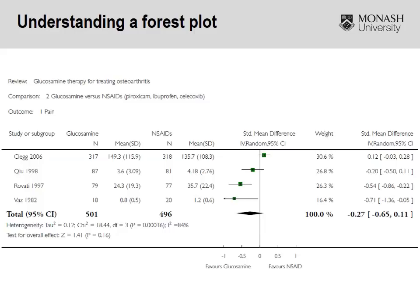A similar process applies with continuous outcomes. In this case, we're looking at glucosamine therapy for the treatment of osteoarthritis, comparing glucosamine versus NSAIDs, with the outcome being pain — a continuous outcome. The only difference is that we're looking at mean difference, so rather than 1 being the line of no effect, 0 is the line of no effect. If the mean pain score in the control group is 1 and the mean score in the intervention group is also 1, 1 minus 1 gives you 0 — hence why 0 is the line of no effect.